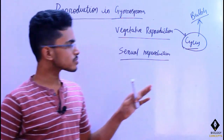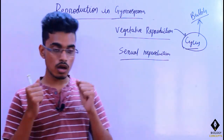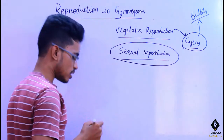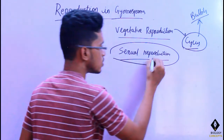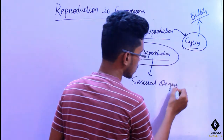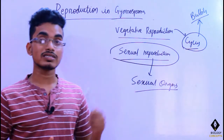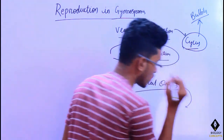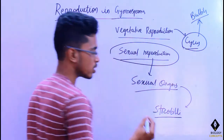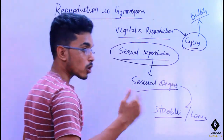Now let us understand about sexual reproduction and how it occurs in gymnosperms. To perform sexual reproduction, we need to have sexual organs. The sexual organs in gymnosperms are in the form of strobili, or in better words, we can say reproductive cones.